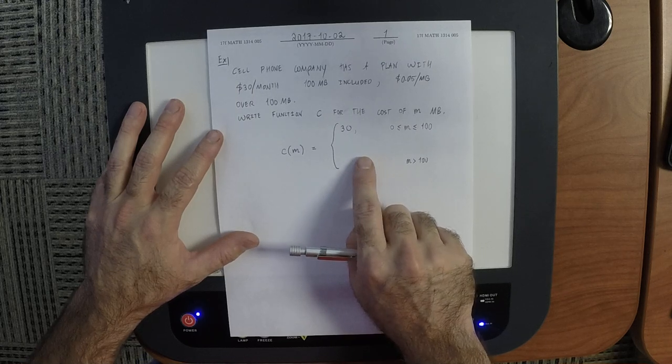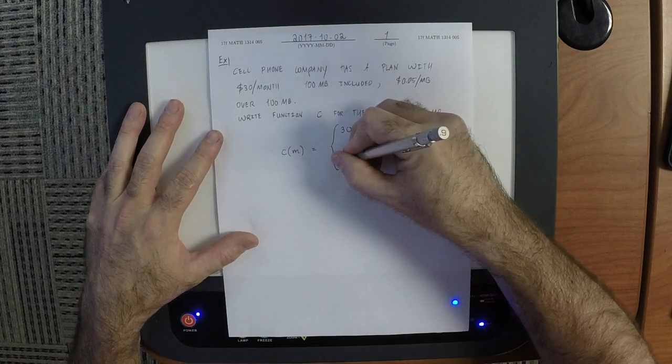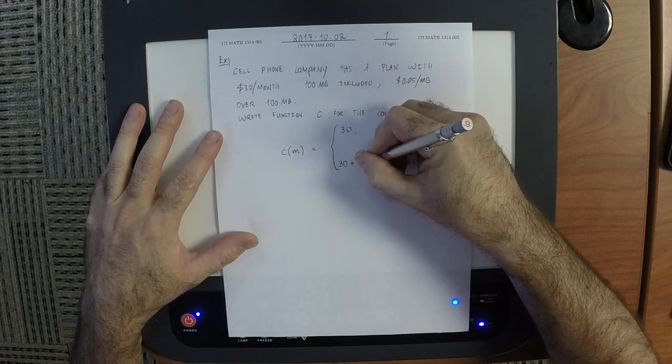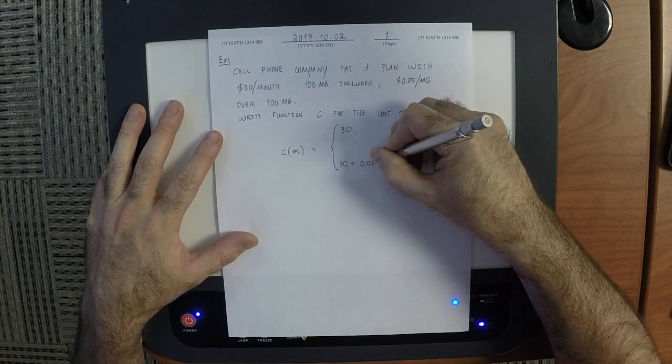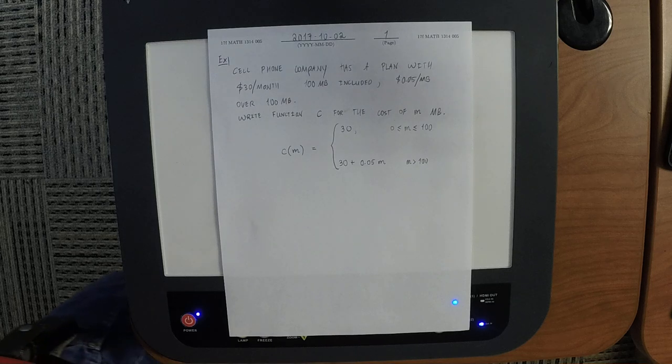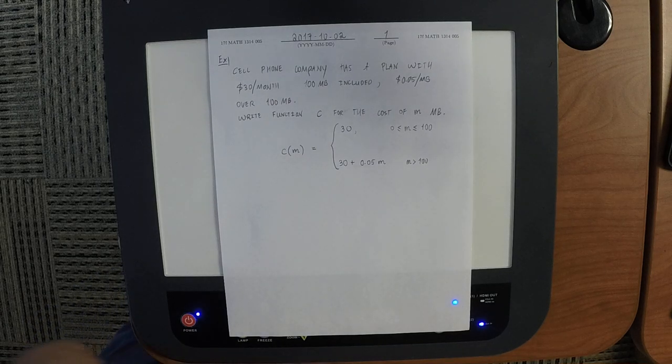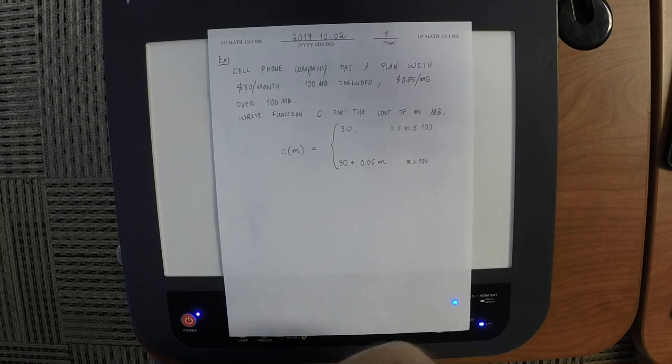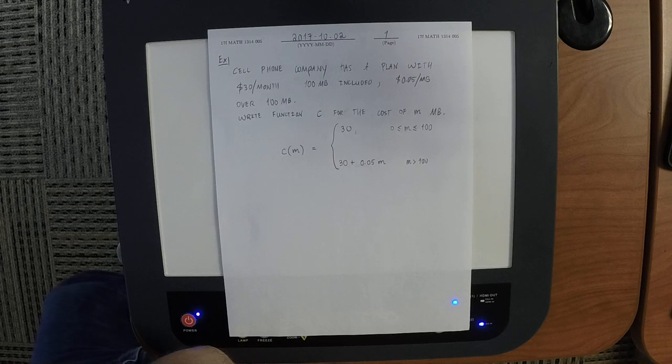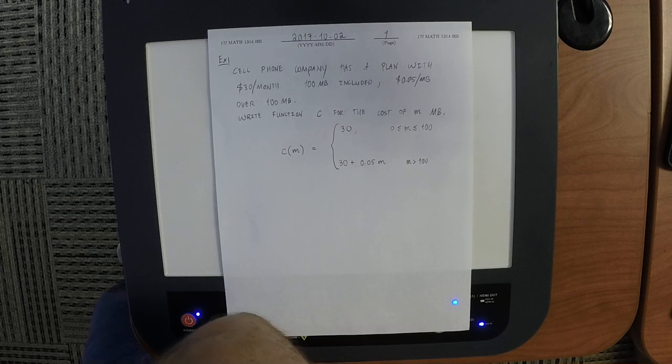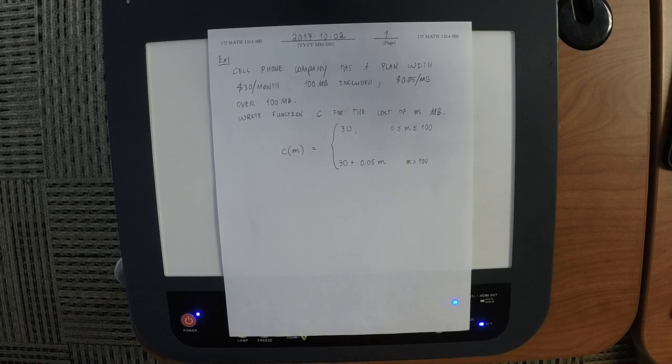So the first thing I heard was 30 plus 0.05 M, okay, and this is not right, but it's what many students first think, so let's try and see, it's nearly right. Let's try and see what the answer should be, so remind me again, what if you use exactly 101 megabytes, then what should the price be? Should be $30, and then you went over one megabyte, so another nickel, yeah?